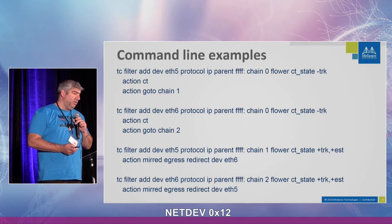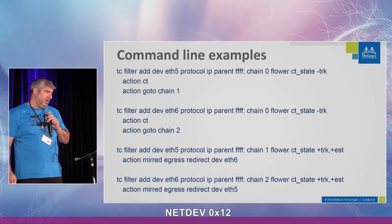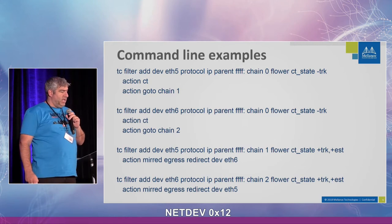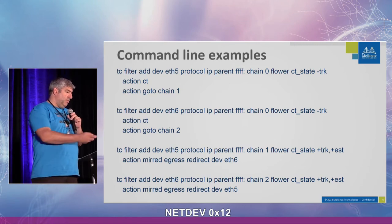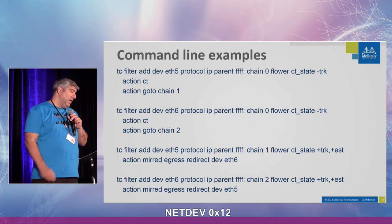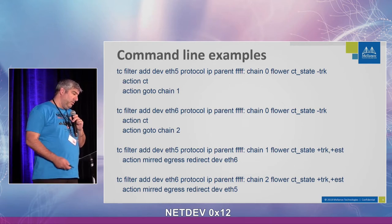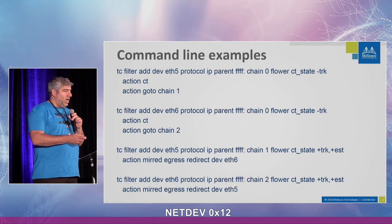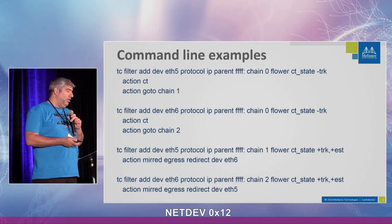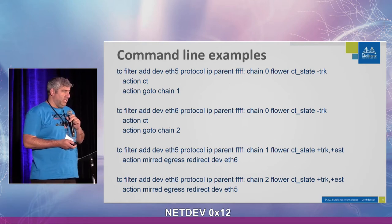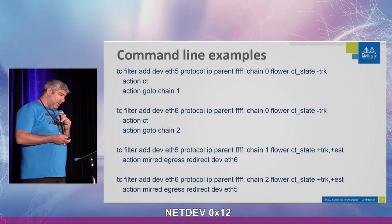Here is an example of how a TC command line will look like — I also presented this last year. As you can see, there are matches in the first line and an action to go to connection tracking. And how you continue, because after going to connection tracking you probably want to do a lookup on the value that comes back. This is shown in the second rule example.